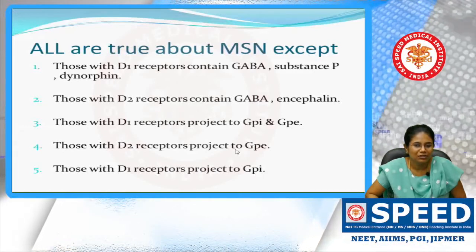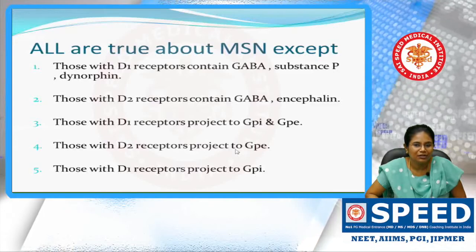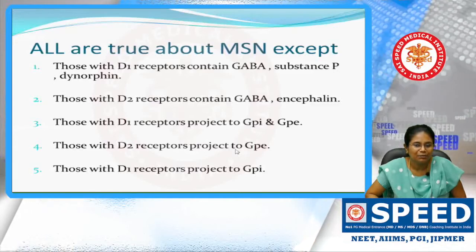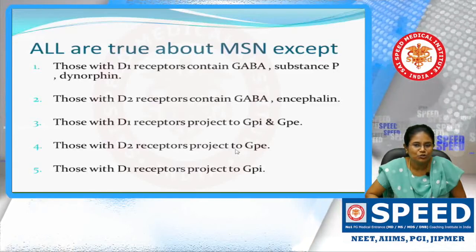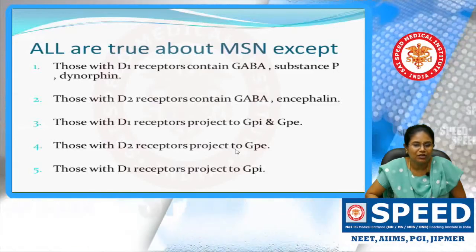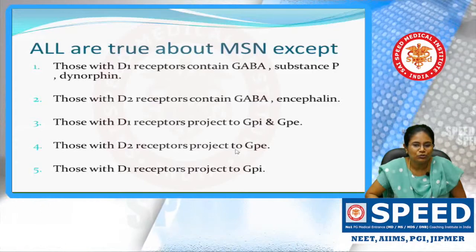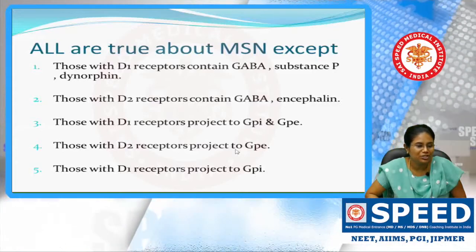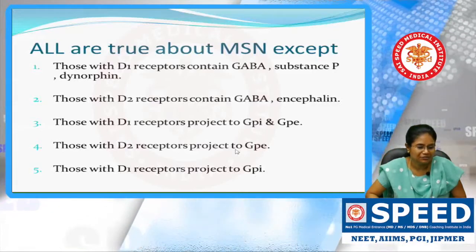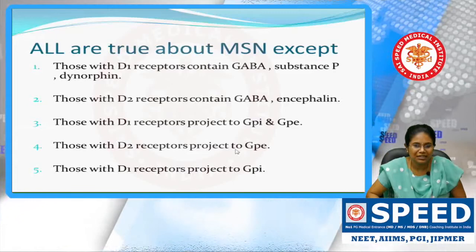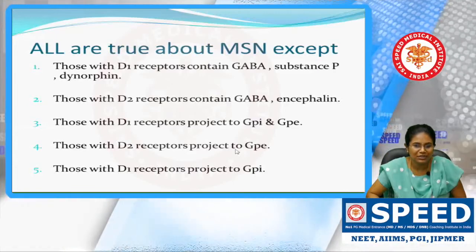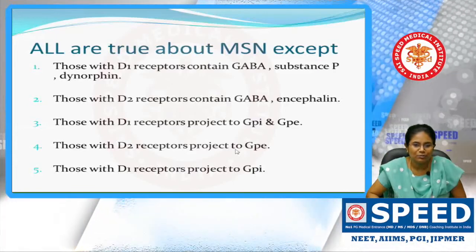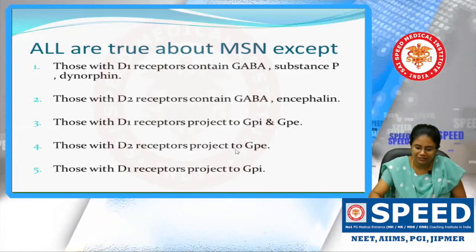Those with D1 receptors contain GABA, substance P, and dynorphin, and they project to GPi — they do not project to GPe. GPi is globus pallidus interna and GPe is globus pallidus externa.